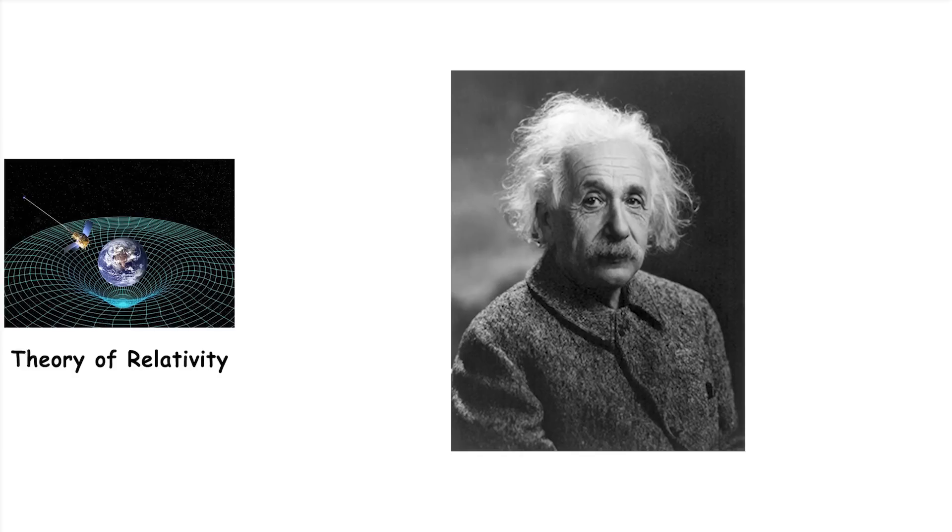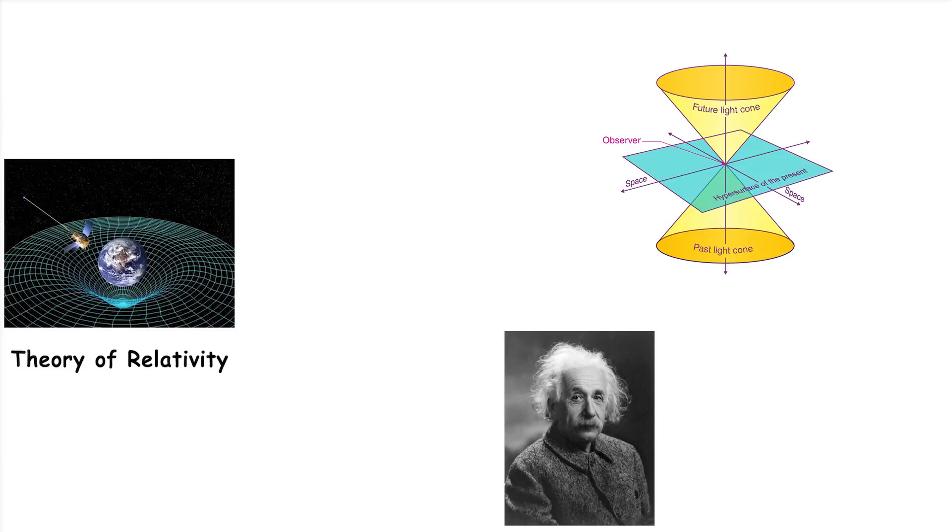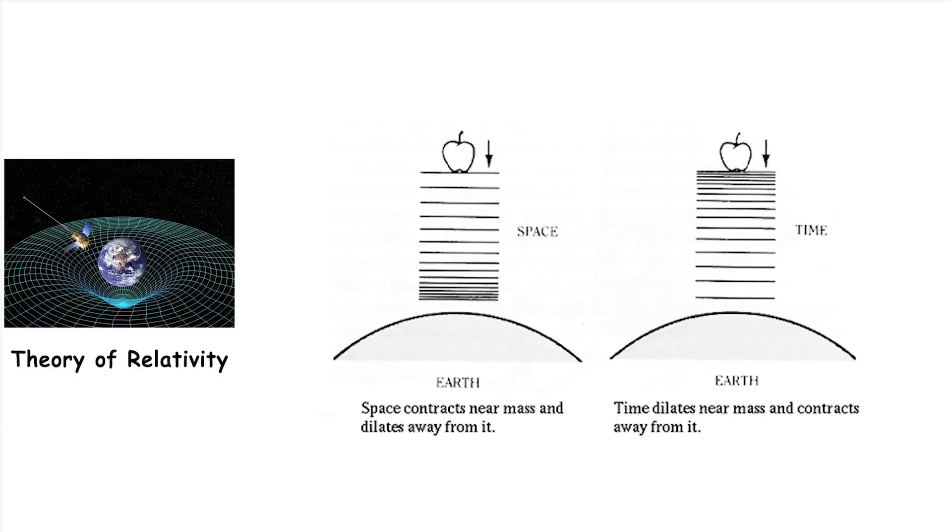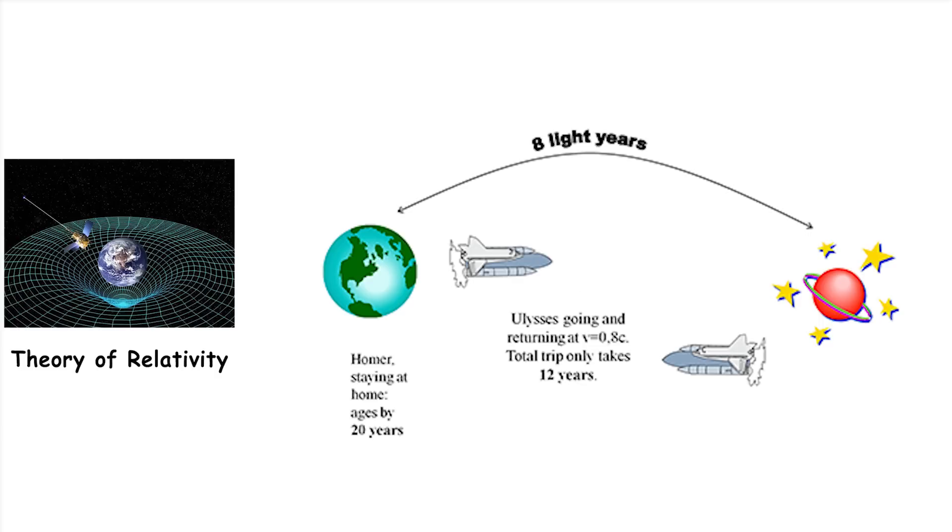Theory of relativity. Albert Einstein's theory of relativity includes special relativity, which deals with objects moving at constant speeds, and general relativity, which deals with gravity. It shows that time and space are connected, and that time moves slower for objects moving faster, or in stronger gravitational fields. If you travel in a spaceship at a very high speed, time will pass slower for you compared to people on Earth.